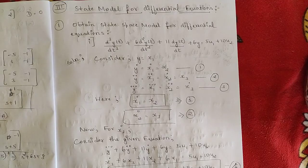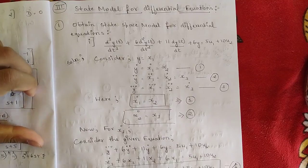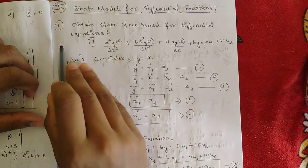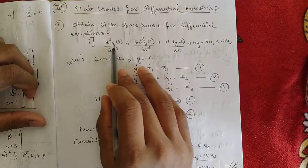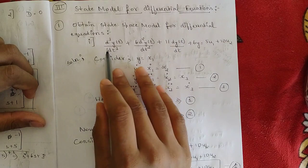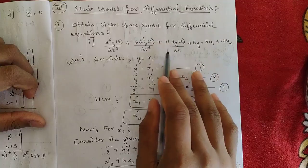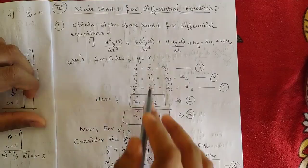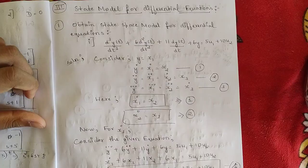In this video I have already solved two questions. I'm going to explain them one by one. The first question is: obtain the state space model for the differential equation — d³y/dt³ + 6 d²y/dt² + 11 dy/dt + 6y = 5u₁ + 10u₂. For this differential equation you should obtain the state space model, writing both the state equation and the output equation.